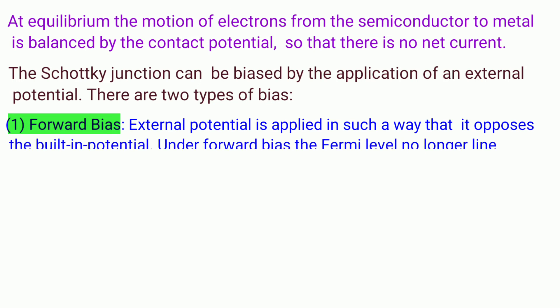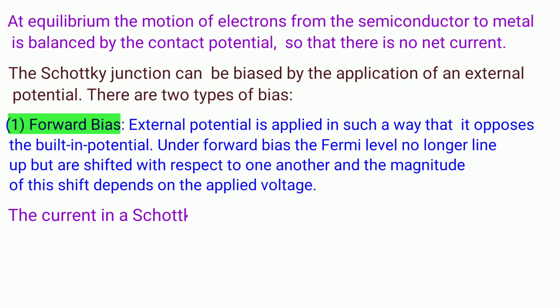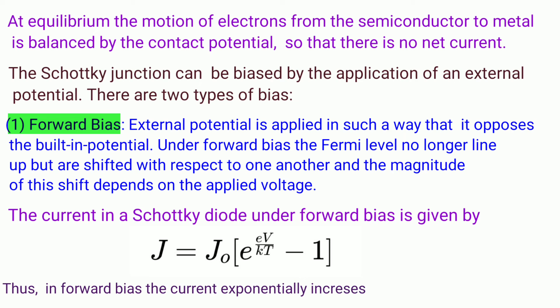In forward bias Schottky junction, the external potential is applied in such a way that it opposes the built-in potential. Under external bias, the Fermi levels no longer line up and are shifted with respect to one another, and the magnitude of these shifts depends on the applied voltage. The current in a Schottky diode under forward bias is given by J equals J0 exponential E V upon KT minus 1. Here J is the current density for the applied potential of V. J0 is constant and depends on the Schottky barrier Phi B for the system, and the expression is J0 equals A T squared exponential minus Phi B upon KT, where A is Richardson's constant for thermionic emission. This equation shows that the current in the forward bias exponentially increases with applied voltage.